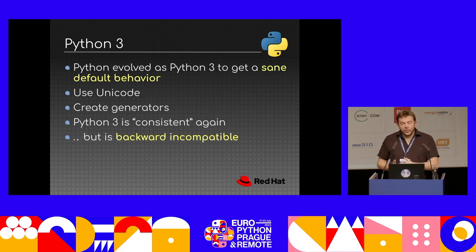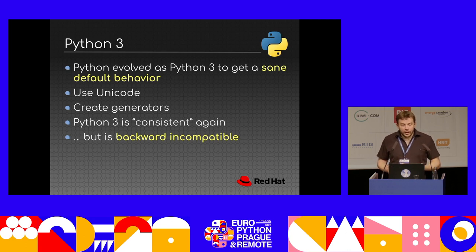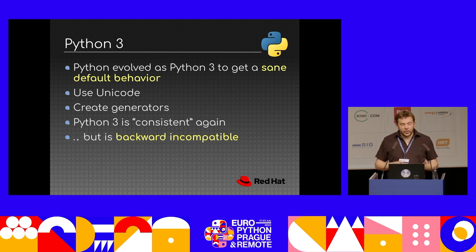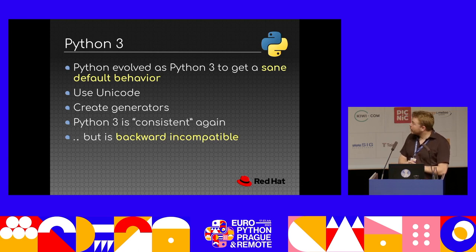The idea of Python 3 is that we collected everything we didn't like — the bad patterns — and tried to address them all at once: use Unicode by default, create generators by default. The language becomes consistent again, because Python 2 had accumulated features that made it a little inconsistent. Now you have the good defaults and it just works. But there's a minor issue: it's backward incompatible.